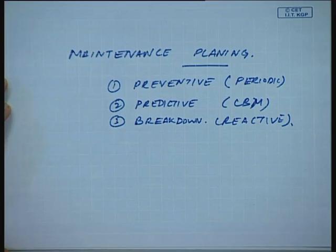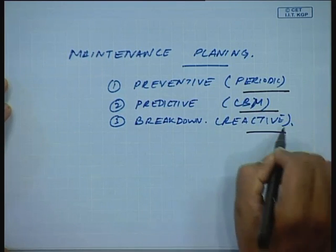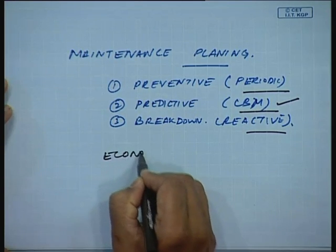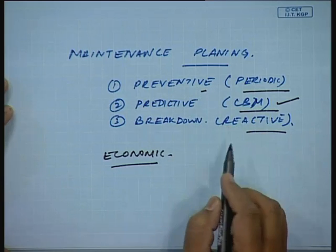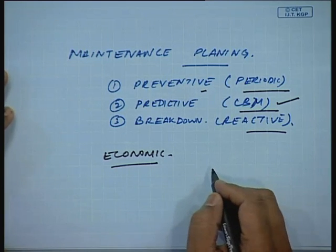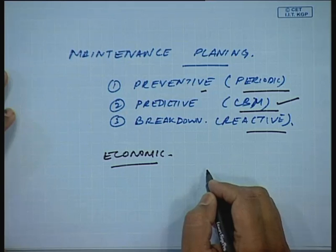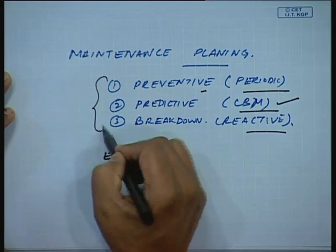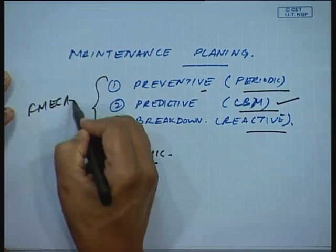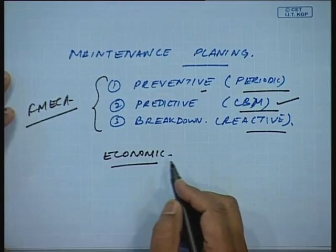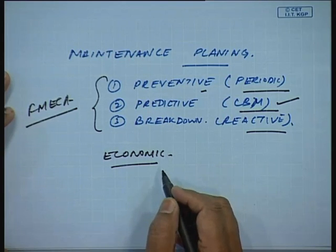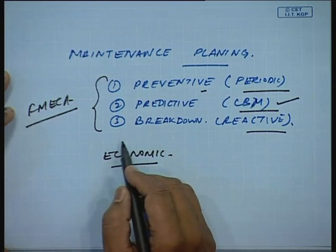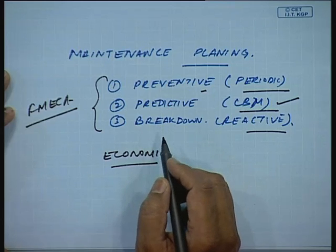In the last class, I told you that through economic analysis, CBM is much more economical in the long run than preventive maintenance. But because of the high capital investments involved in CBM, we cannot always apply it to all machines. So we have to use FEMICA to decide which machines need which kind of maintenance, giving us a quantitative ranking.